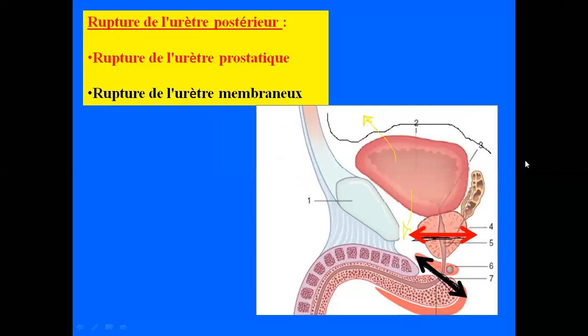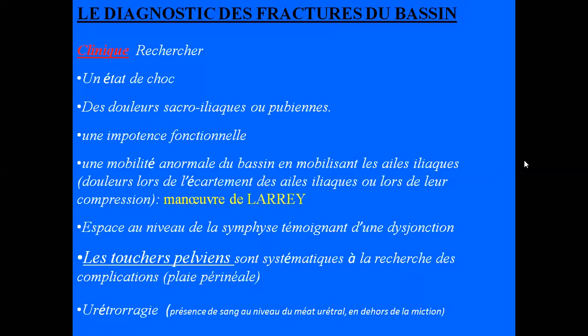L'urètre postérieure — prostatique ou membraneuse — peut aussi être rompue par les déplacements ou touchée par un fragment osseux. Cela donnera un tableau de rétention avec un globe vésical par impossibilité d'uriner.